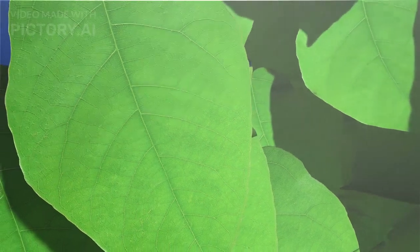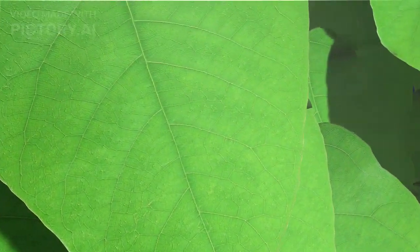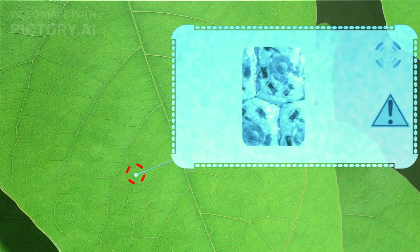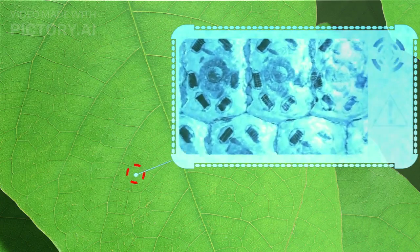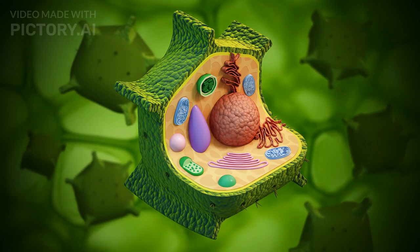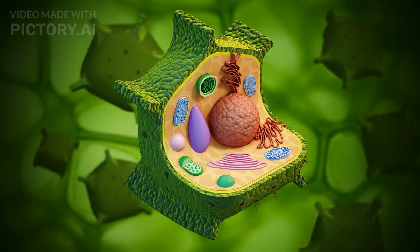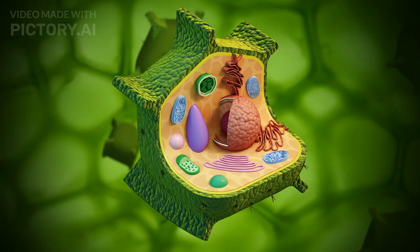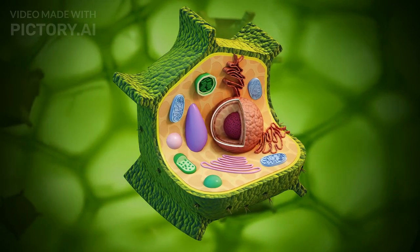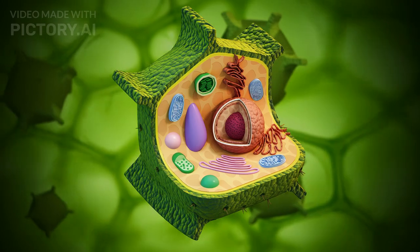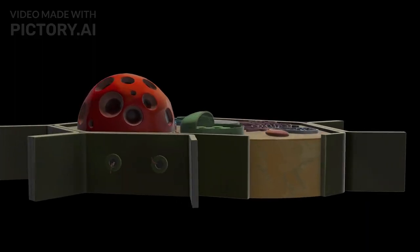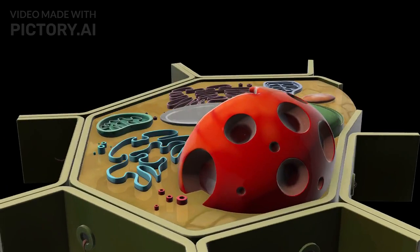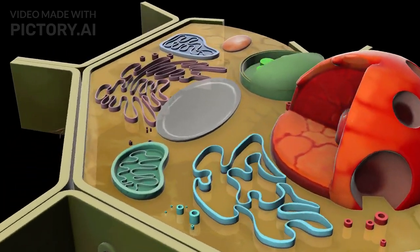First, let's look at the plant cell and the different organelles present in it. Plant cells have a rigid cell wall made of cellulose, which provides structural support and protection. Inside, you'll find a large central vacuole that stores water and maintains turgor pressure.